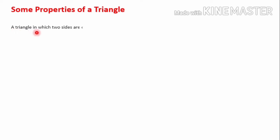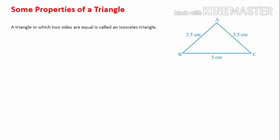Next we shall discuss some properties of triangles. A triangle in which two sides are equal is called an isosceles triangle. In triangle ABC, the length of AB and AC are equal at 3.5 cm, and BC is 5 cm. Since two sides AB and AC are equal in length, triangle ABC is an isosceles triangle with AB equal to AC.